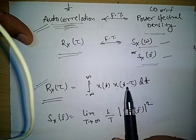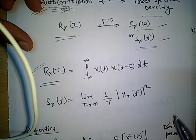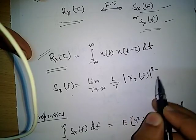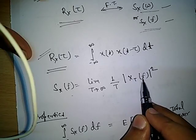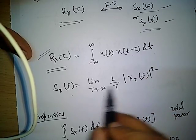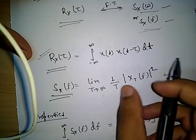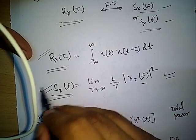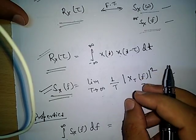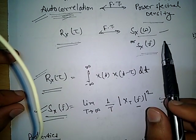We can also define the power spectral density in terms of the function x(t) in the frequency domain as: S_x(f) = limit as T tends to infinity of (1/T)|X_T(f)|², where X_T(f) is the Fourier transform of a truncated version. This represents the energy of the function at a particular frequency f, and the average value shows how the power is concentrated at that frequency. So power spectral density tells us how power is concentrated at a particular frequency.